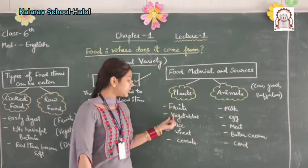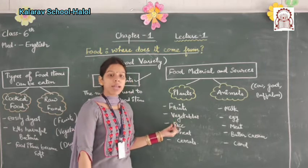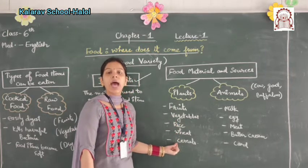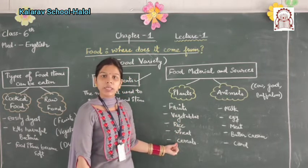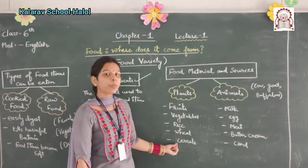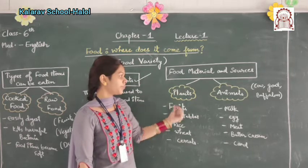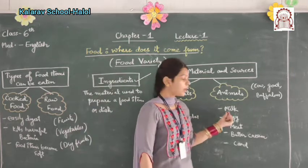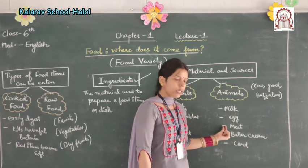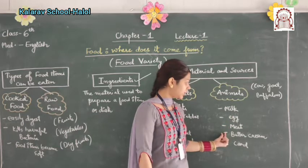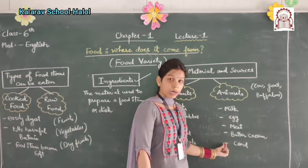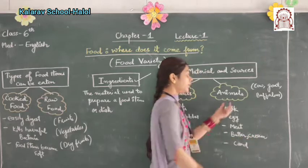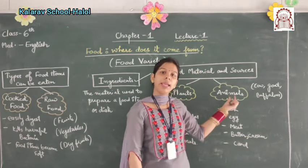Fruits, vegetables, rice, wheat, and cereals are items which we obtain from plants. Milk, egg, meat, butter, curd, and cream are obtained from animals.